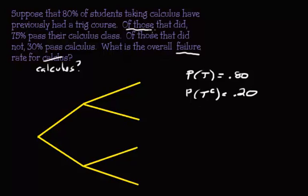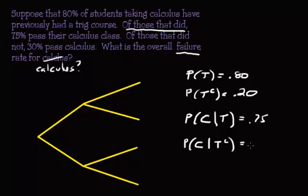And then you have the 'of those that did not take,' of those that did take trig, okay, so that's your conditional probability that they passed calc. So I'm going to represent passing calc with a C. So probability of passing calc given that you passed trig, or that you took trig, sorry, would be 0.75 for 75%. And then the probability that, let's see, of those that did not take trig, 30% passed calc. So probability of calc given that you did not pass trig would be 0.3.